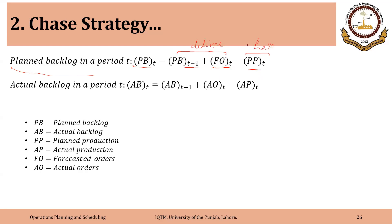The difference of the two — if positive — shows the backlog that we are planning to carry. The same is true for the actual backlog formula. Actual backlog in a period equals actual backlog from the previous period, plus actual orders in the current period, minus actual production in the current period.